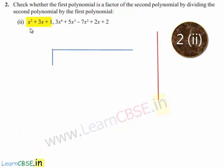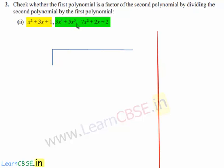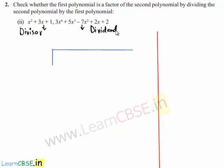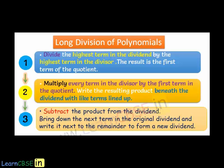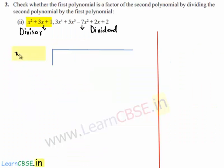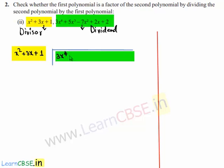Now the second part given to us: the first polynomial is x² plus 3x plus 1, and the other polynomial is 3x⁴ plus 5x³ minus 7x² plus 2x plus 2. Since we need to divide the second polynomial by the first polynomial, the first polynomial becomes the divisor and the second polynomial becomes the dividend. The divisor x² plus 3x plus 1 and the dividend 3x⁴ plus 5x³ minus 7x² plus 2x plus 2 are written here.